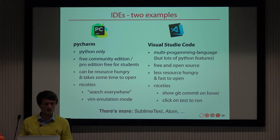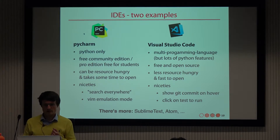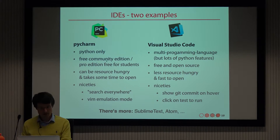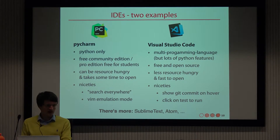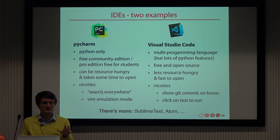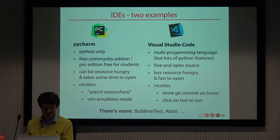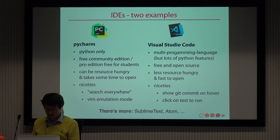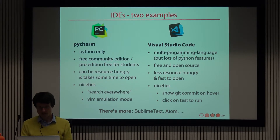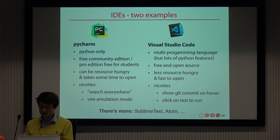Two examples of IDEs: PyCharm was originally more popular in the AIDA core developer group. PyCharm is an integrated development environment focused on Python. There's a free community edition; the pro edition is free for students but requires payment otherwise. It can be resource hungry and slow to open. Nice features include a very powerful search-everywhere function across your whole codebase, and it has a Vim emulation mode. Then there's Visual Studio Code by Microsoft — not Python-specific but multi-language with lots of Python-specific features through its plugin system. It's free and open source.